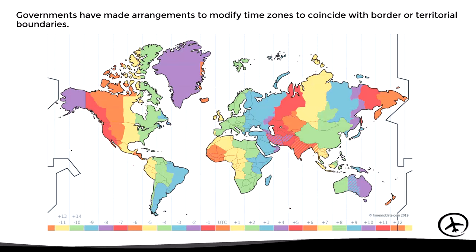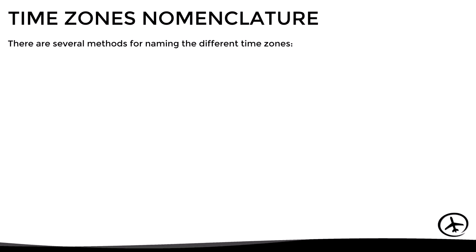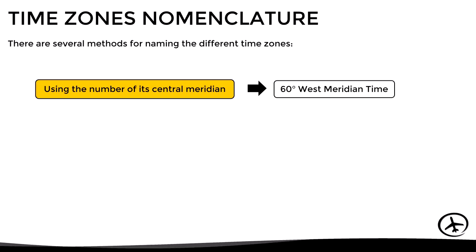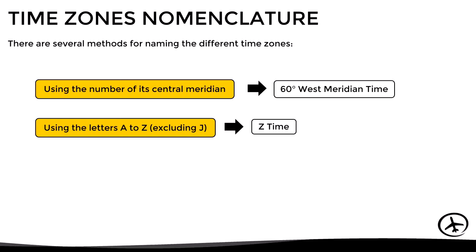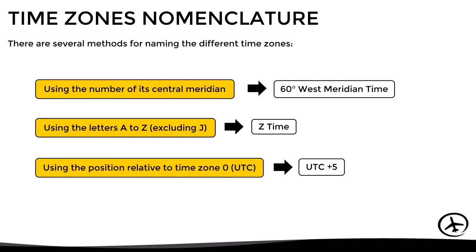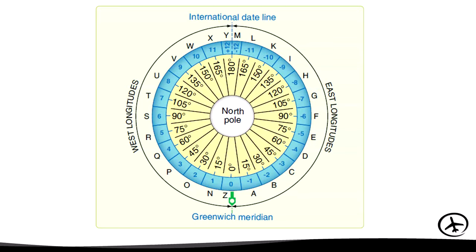There are several ways of naming the different time zones. We can use the number of the central meridian, for example '60 degrees west meridian time.' We can also use letters from A to Z excluding J — for example, 'Z time' or 'Zulu time.' Finally, we can use the position relative to the prime meridian, for example 'UTC+5.' We can see how the different time zones are named based on these methods.